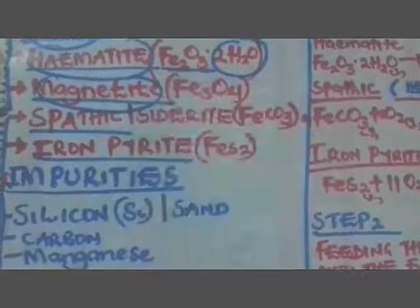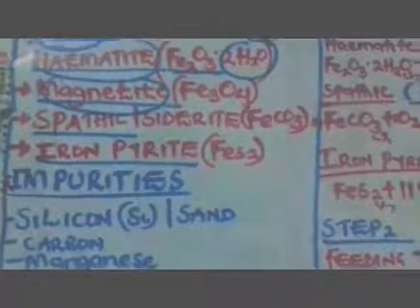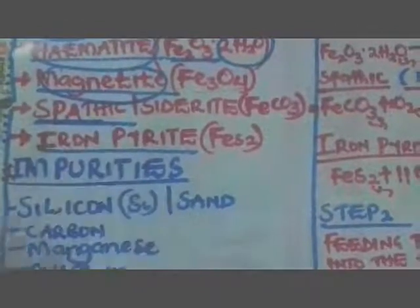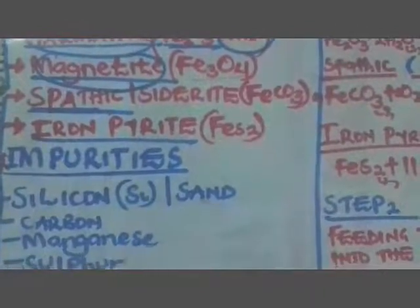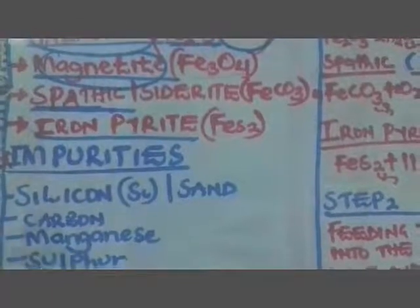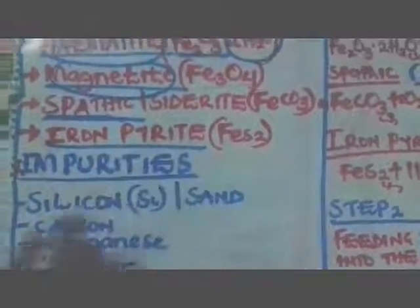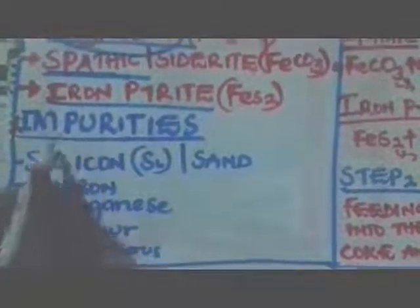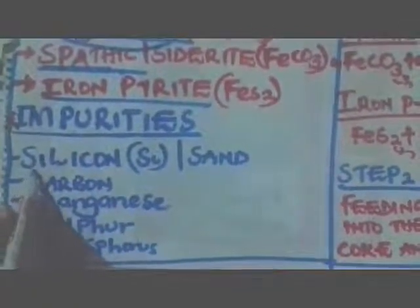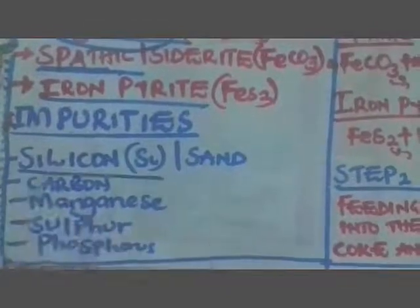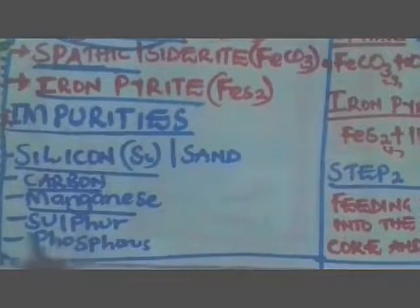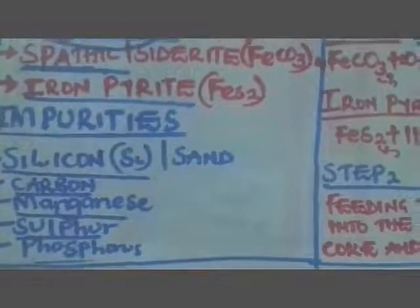Remember, hematite is iron(III) oxide, and magnetite is tri-iron tetra oxide. We shall also talk about siderite, which is iron(II) carbonate. Now to understand properly how we can extract a metal, we must understand the impurities present. The impurities found in iron ore include silicon, carbon, manganese, sulphur, and phosphorus.